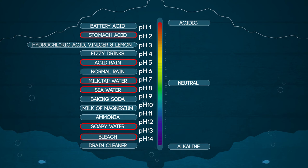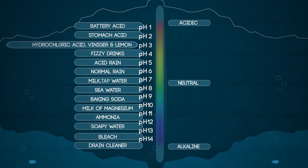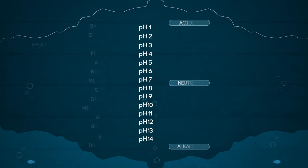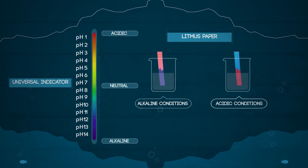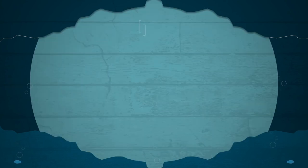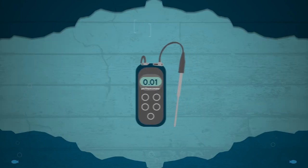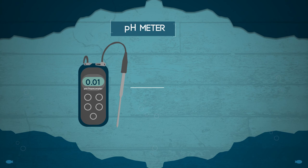Universal indicator is so called due to its ability to indicate the entire pH spectrum. There are other indicators that can be used that have other colour changes, but these two are the ones you need to know. We can also get even more accurate measurements of pH using a pH meter which will give us readings to 0.01 of the pH.